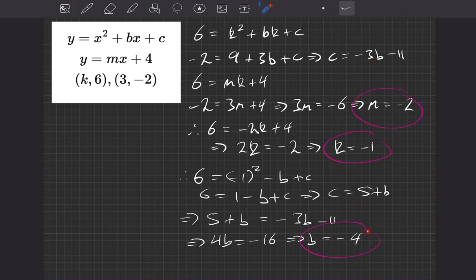Nice and simple, it's just going to be 5 plus minus 4, so 5 minus 4, which is 1. So c is equal to 5 minus 4, which is equal to 1.